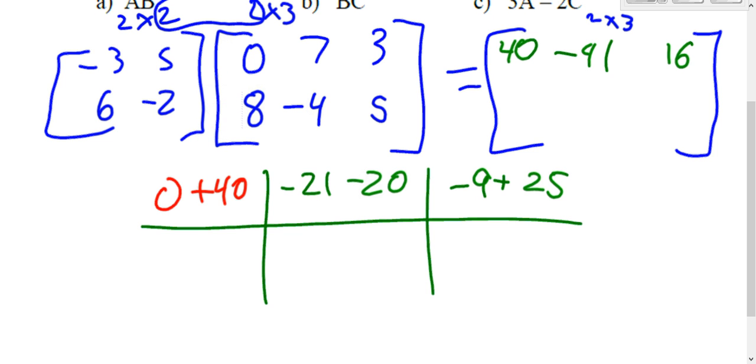Now we're going to do the similar process with the bottom now. The 6 and the negative 2. So 6, negative 2. 6 times 0 is 0. Negative 2 times 8 is negative 16. Add those up. That's negative 16 in the bottom left. 6 times 7 is 42. Negative 2, negative 4. That's positive 8. Add that up. That's 50 in the bottom middle.